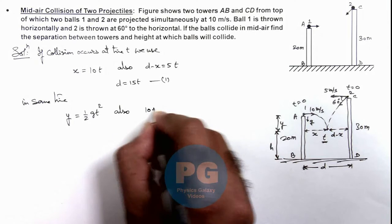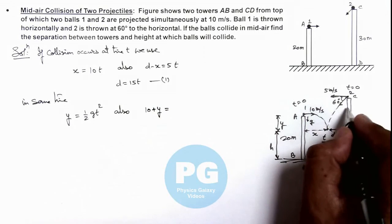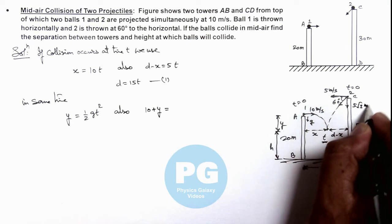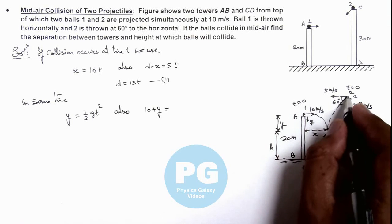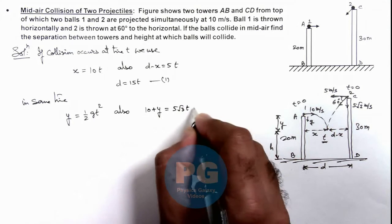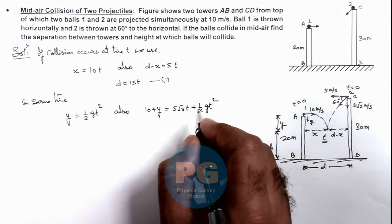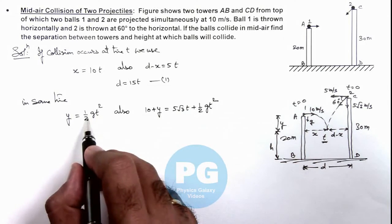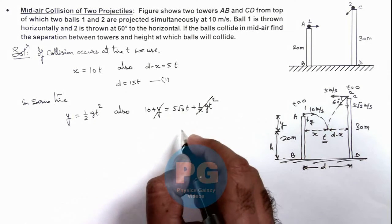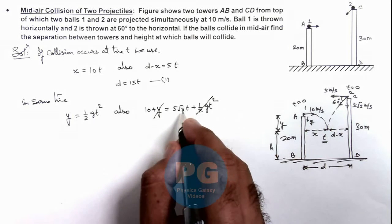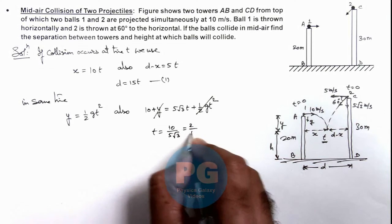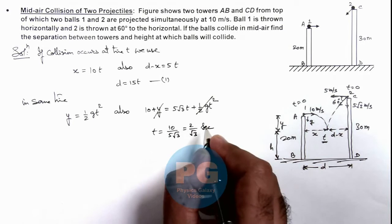So we can write 10 plus y equals its downward speed, which is 10 sine 60 degrees, that will be 5 root 3 meters per second, which is the vertical downward initial speed of projection for ball 2. So here we can write 5 root 3 t plus half g t squared. If we substitute the value of y as half g t squared, y and half g t squared gets cancelled out, and what we are getting is t equals 10 by 5 root 3, that is equal to 2 by root 3 seconds. So this is the time after which the collision is taking place.